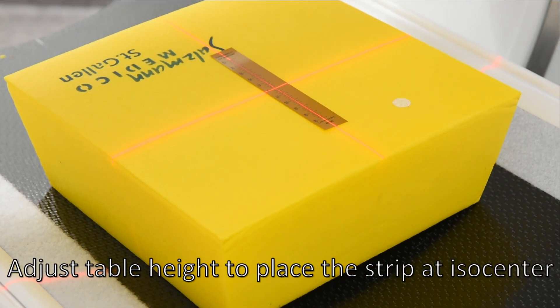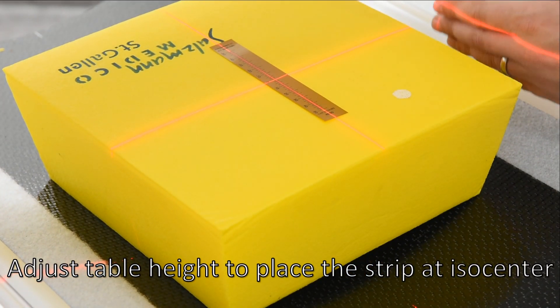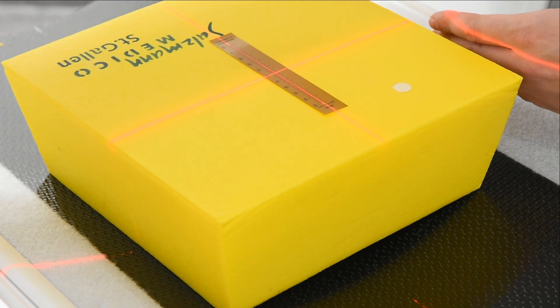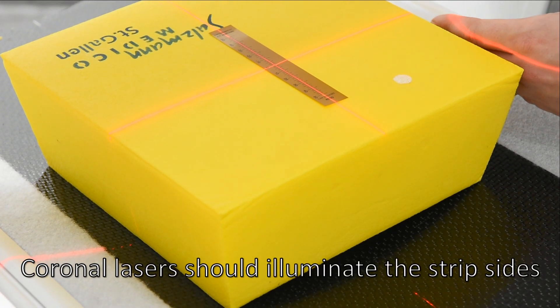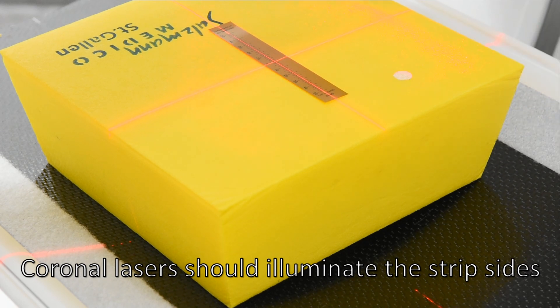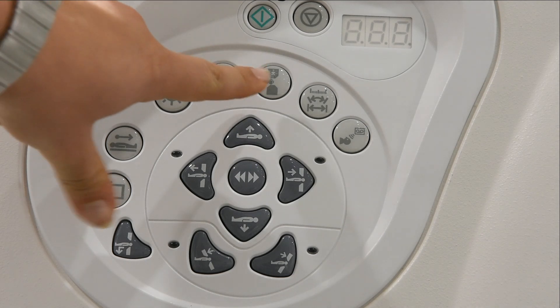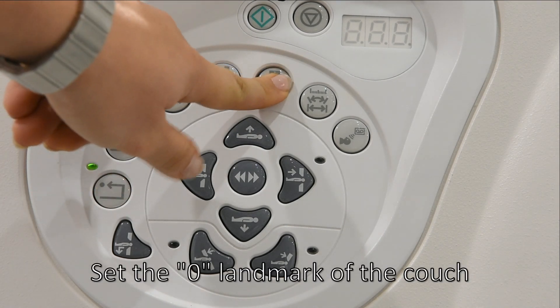Adjust table height to place the strip at isocenter. Coronal lasers should illuminate the strip sites. Set the zero landmark of the couch.